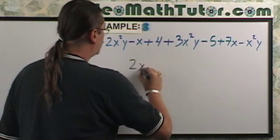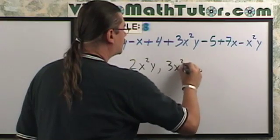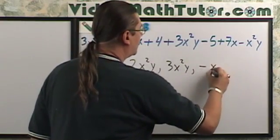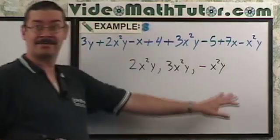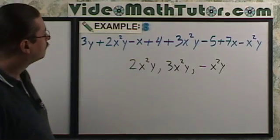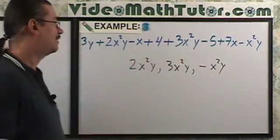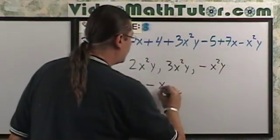Let's list them: 2x squared y, 3x squared y, and negative x squared y. So, here's our first set of like terms. Anything else? Well, negative x, 7x. Aha! So, I can list those.